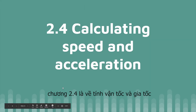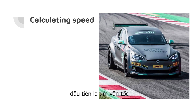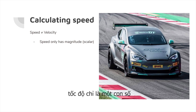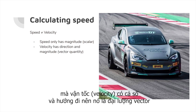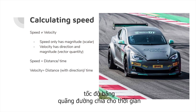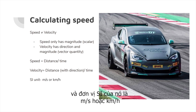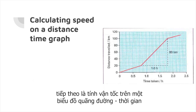Section 2.4: Calculating Speed and Acceleration. Speed is different from velocity. Speed only has magnitude, making it a scalar quantity, while velocity has both direction and magnitude, making it a vector quantity. Speed equals distance divided by time; velocity equals distance with direction divided by time. SI units are meters per second or kilometers per hour.